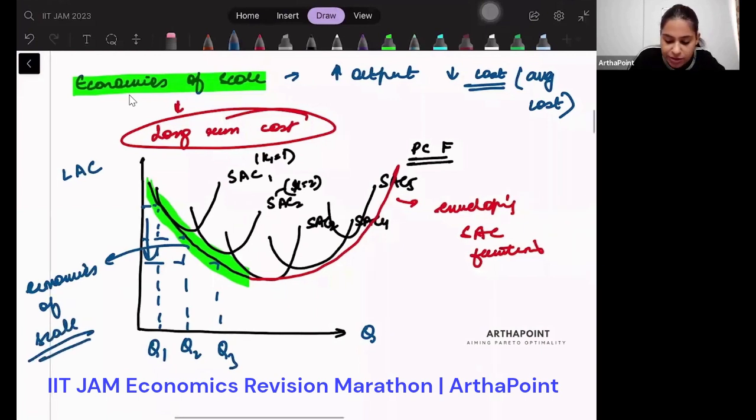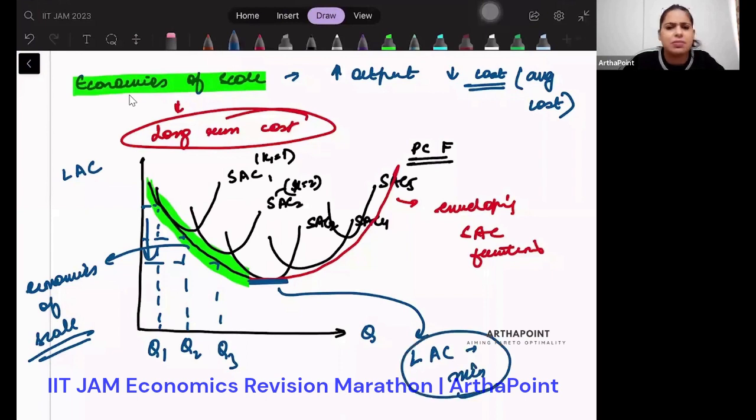At this point, my LAC is minimum. This is where I will actually operate for my profit maximization. So this is where my LAC is minimum. This is what we want to minimize. So this is where we have constant returns to scale.